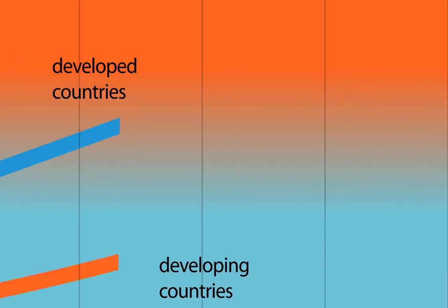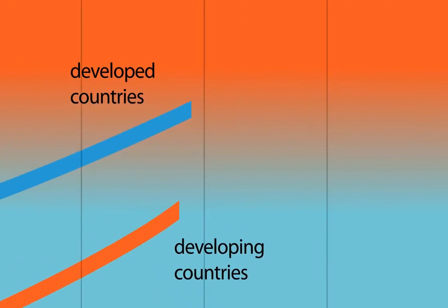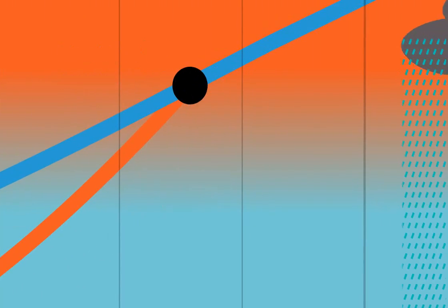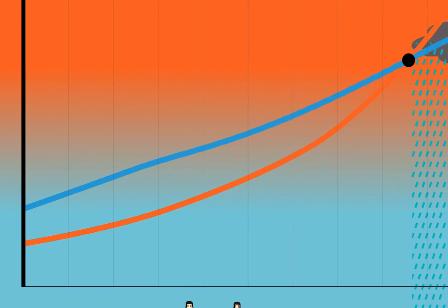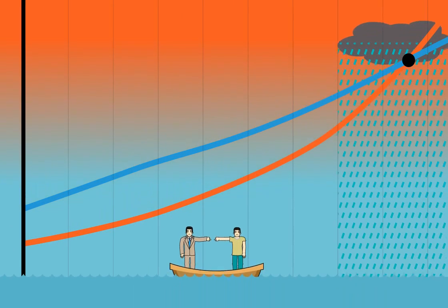Now, the amount of greenhouse gas emissions from developing countries is growing so fast that their yearly emissions are overtaking that of developed countries. There's no point in pointing fingers at each other.